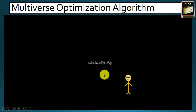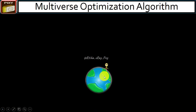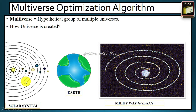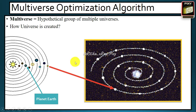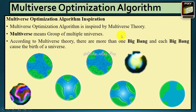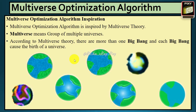Let's start with a simple introduction. As we all know, we live on planet Earth, which is in the solar system, and our solar system is in the Milky Way galaxy. According to multiverse theory, we have multiple universes. This algorithm is inspired by multiverse theory — multiverse means a group of multiple universes.